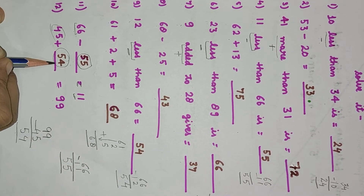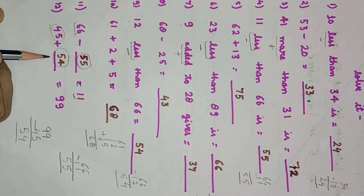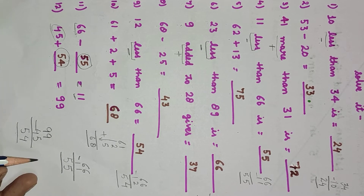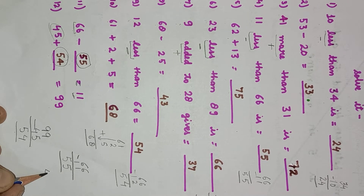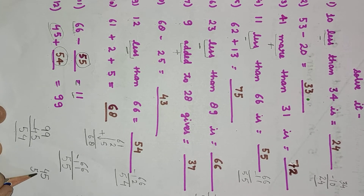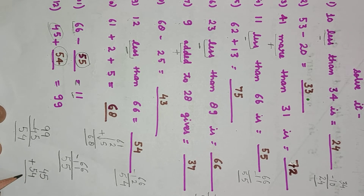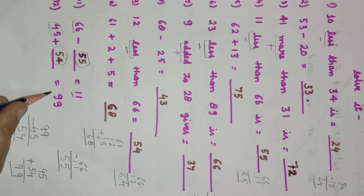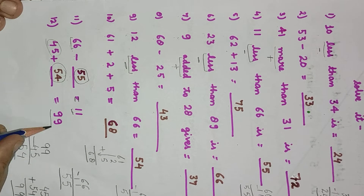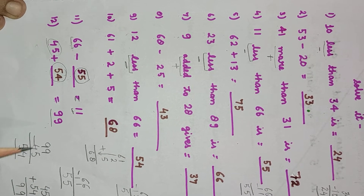Now suppose we have some confusion about whether our answer is right or wrong — we will recheck it. 45 plus 54: 5 plus 4 will be 9, and 4 plus 5 will be 9. Here is 99. So it shows that our answer is correct.